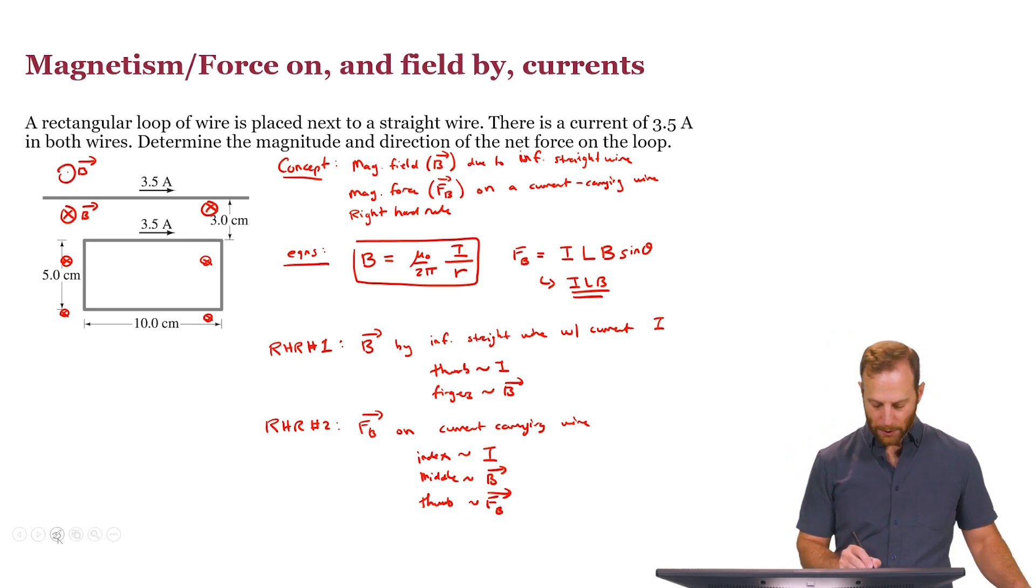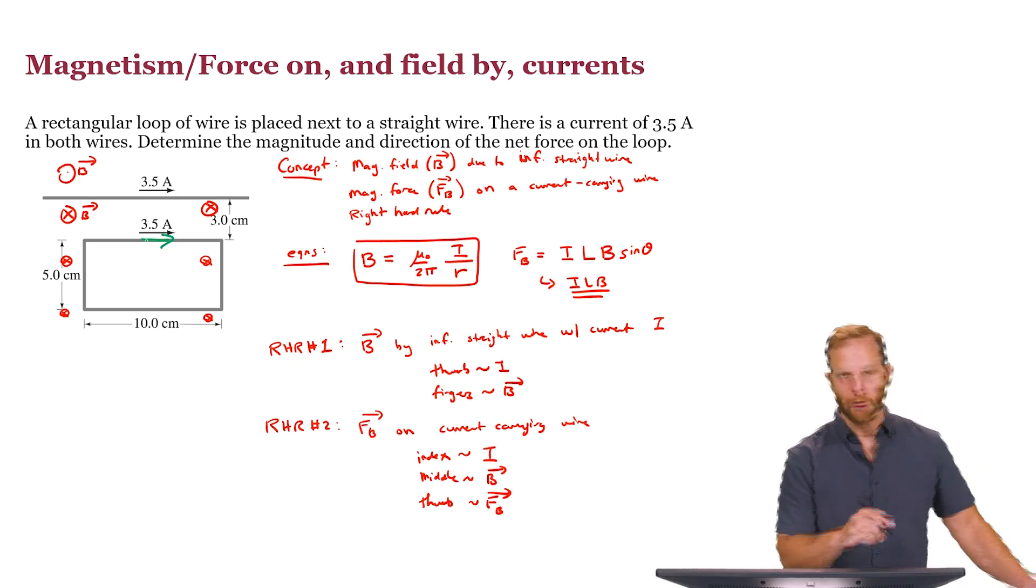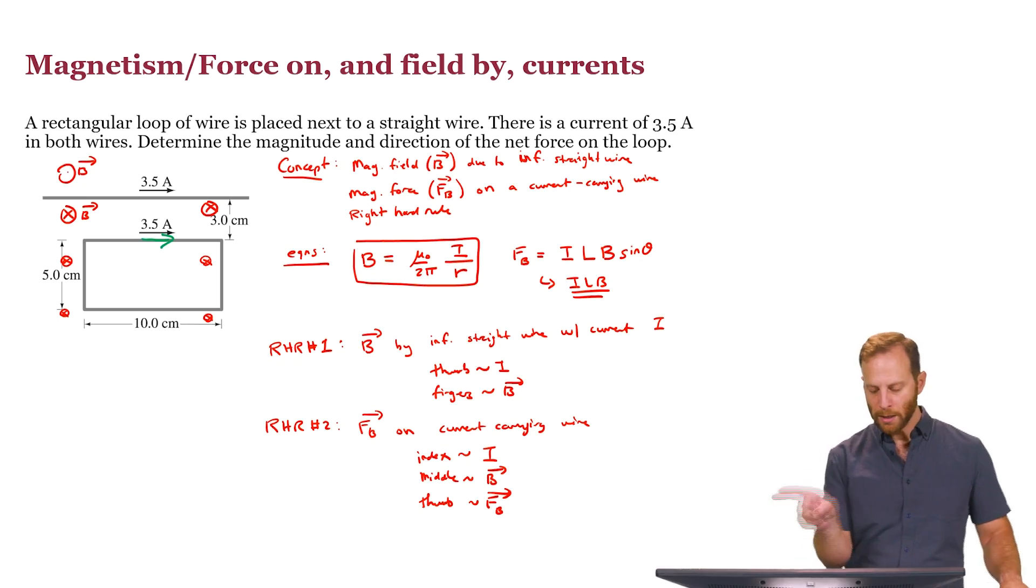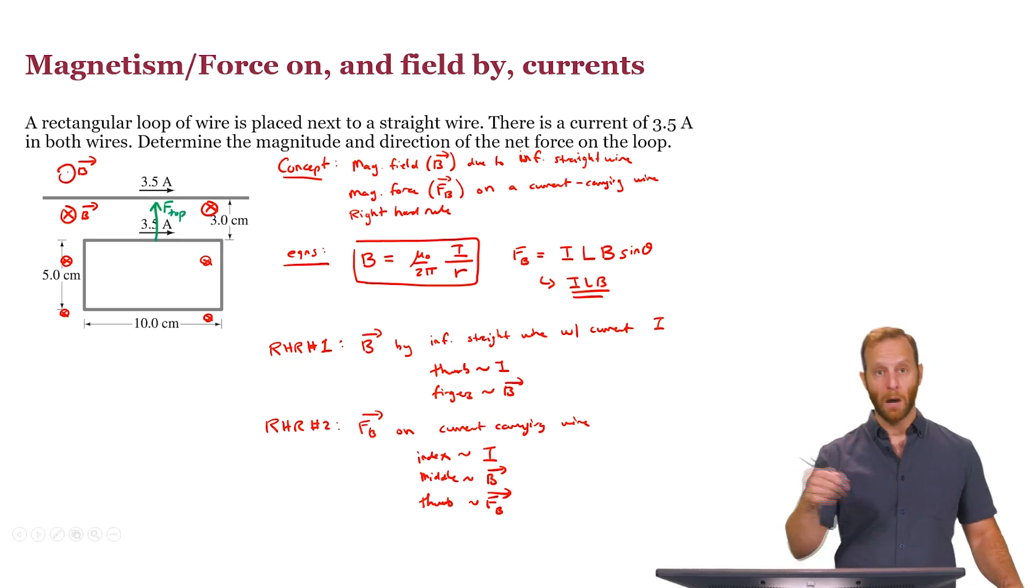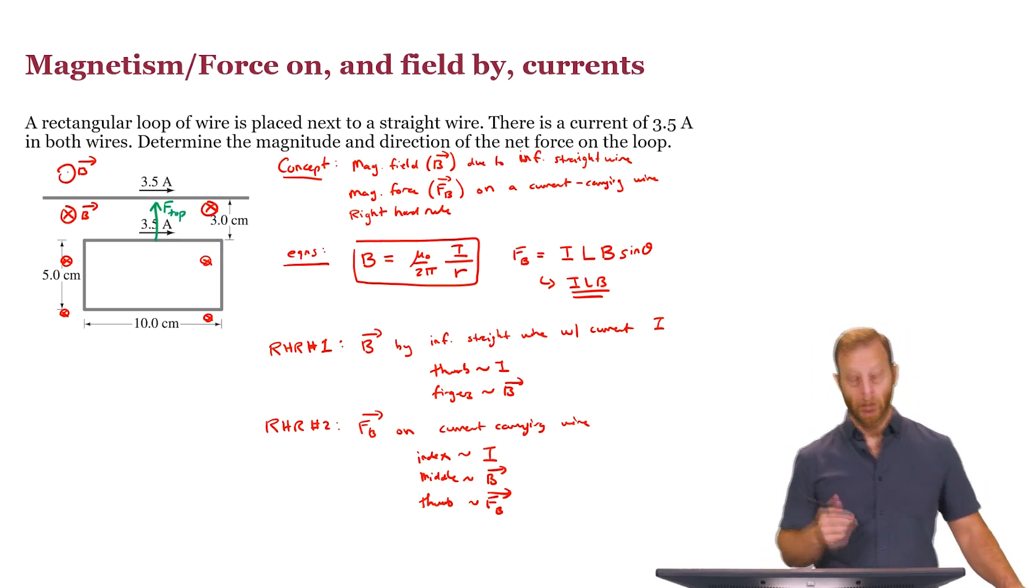We can then ask, what about the magnetic force? And I'll try to draw that in a different color like green. So on the top, given that there is current flowing in this direction, right-hand rule number two tells me index finger in the direction of current, middle finger in the direction of the magnetic field. This tells me that the force acting on the top part of this rectangular loop, the force is this way up. So F top, the force on the top part of the rectangle would point upward.